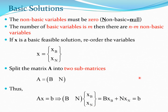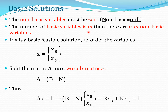The non-basic variables are 0. A good mnemonic to remember this is that non-basic is null — both have the letter N in them — so non-basic must be 0 or null. The number of basic variables is m and there are n minus m non-basic variables.